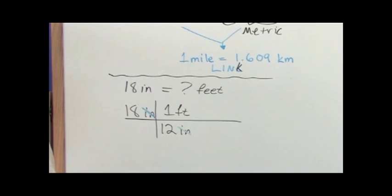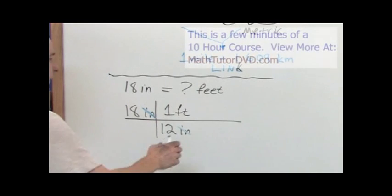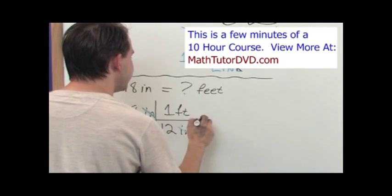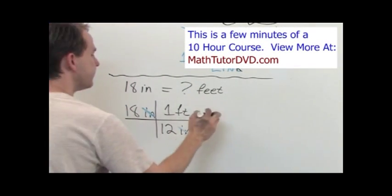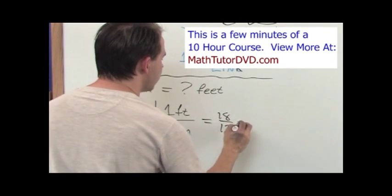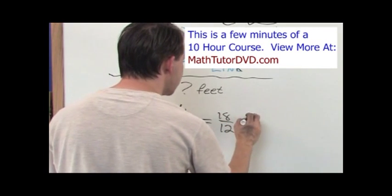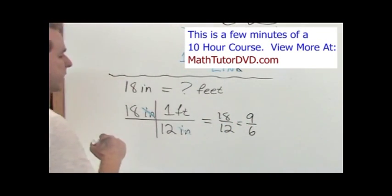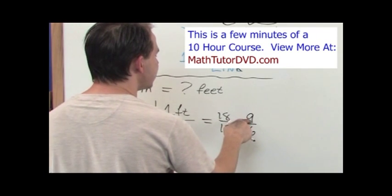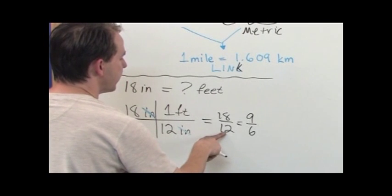They don't matter anymore. They're gone, and all you're left with is feet. So what you're doing here is what you end up doing at the end of the day to do this conversion is you say 18 divided by the 12 that you put on the bottom. And when you actually do that and do this fraction simplification, you're going to get 9/6 because you're going to divide by 2. 18 divided by 2 is 9, 12 divided by 2 is 6.